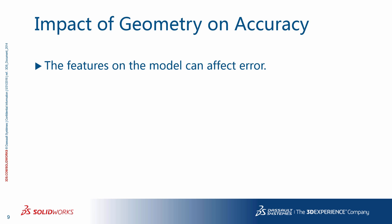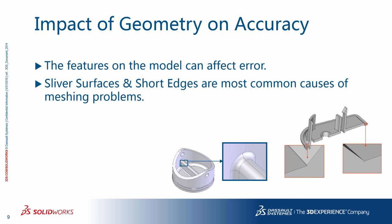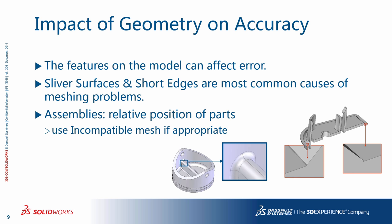The features in the part or assembly can affect discretization, the mesh, and the resulting error. Sliver surfaces and short edges are the most common causes of meshing problems. In assemblies, the relative position of parts can become an issue. If compatible mesh does not work in these areas, you can use an incompatible mesh if appropriate. We covered that in more detail in the mixed meshing video.